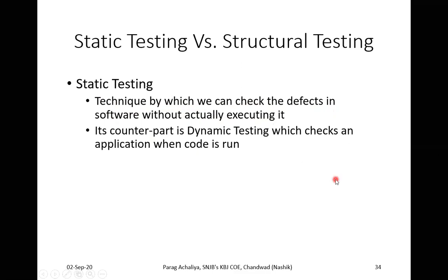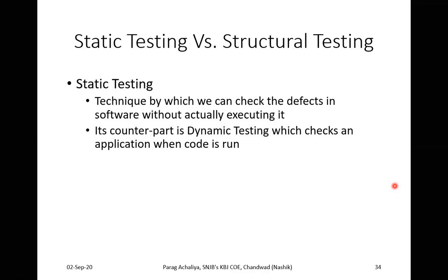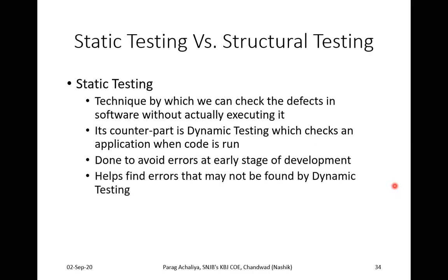The counterpart is dynamic testing, which checks an application when the code is in a running state. Dynamic testing is done when your code is in execution. Static testing should be done to avoid errors at early stages of development, so that errors in initial stages can be avoided or minimized. Static testing helps find errors that may not be found by dynamic testing — it can identify issues that dynamic testing cannot.